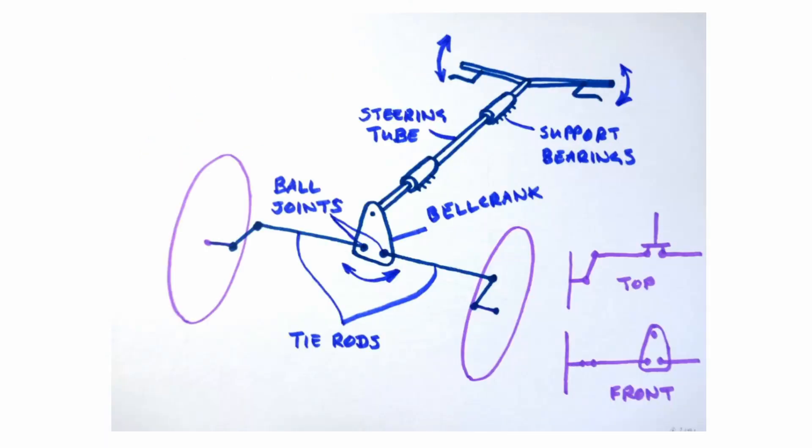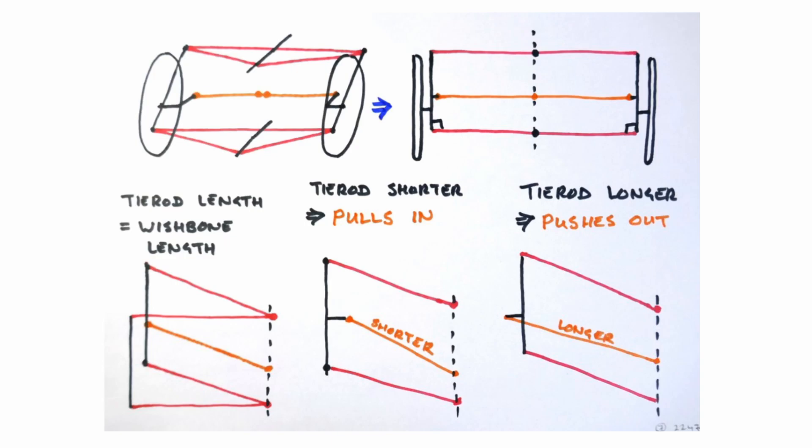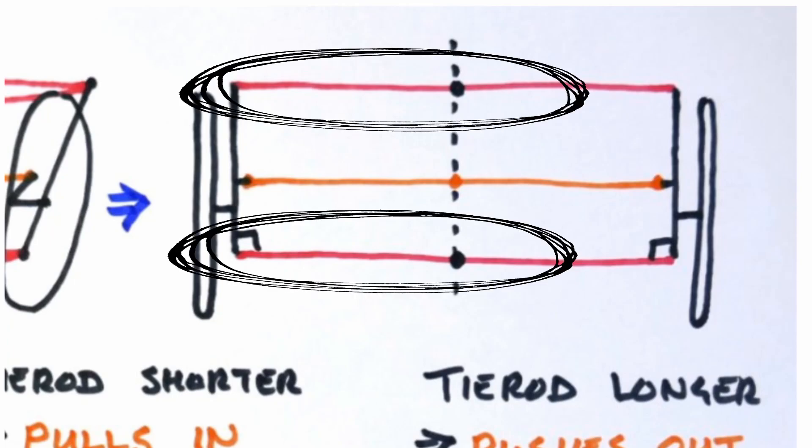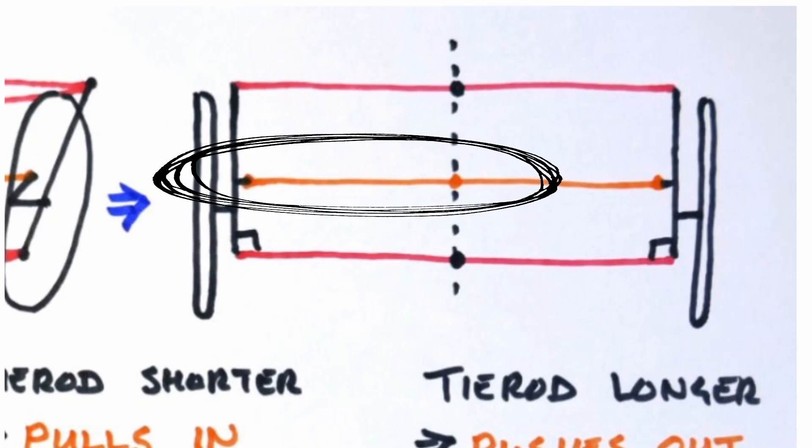Since we are not using the ideal Ackermann geometry we need to understand how to compensate for this. Tie rod length. First, let's look at the length of the tie rods relative to the tilting arms or wishbones. In my design the upper and lower wishbones are of equal length and everything is at right angles in the upright position. In this case the tie rod should be equal in length and parallel to the wishbones.